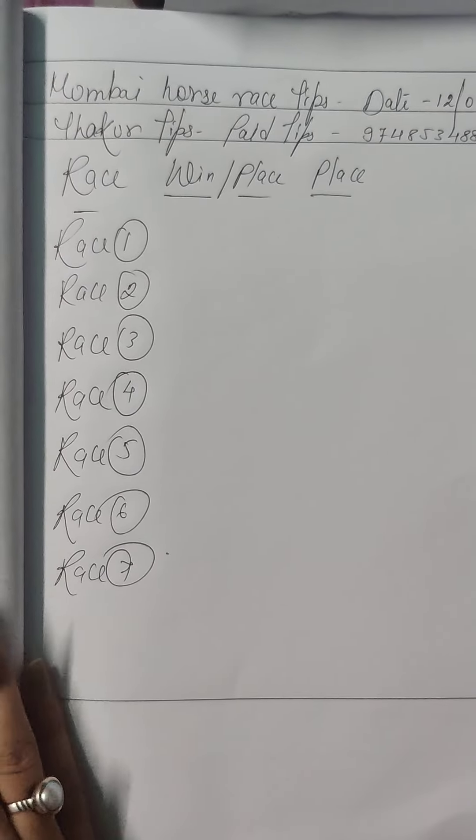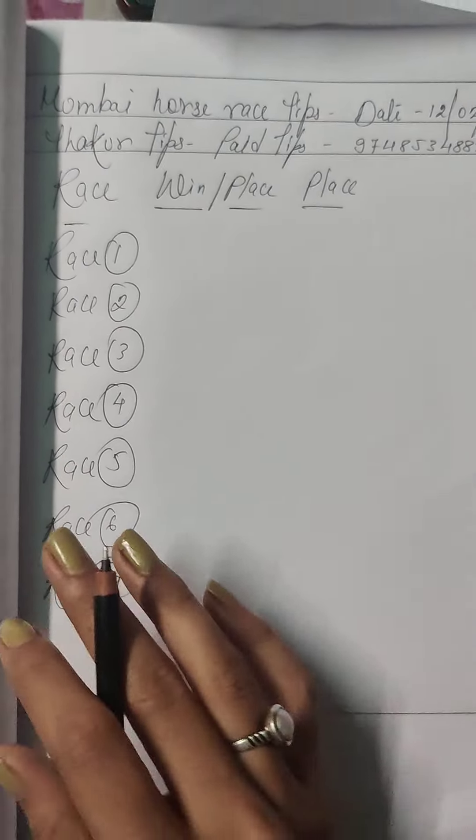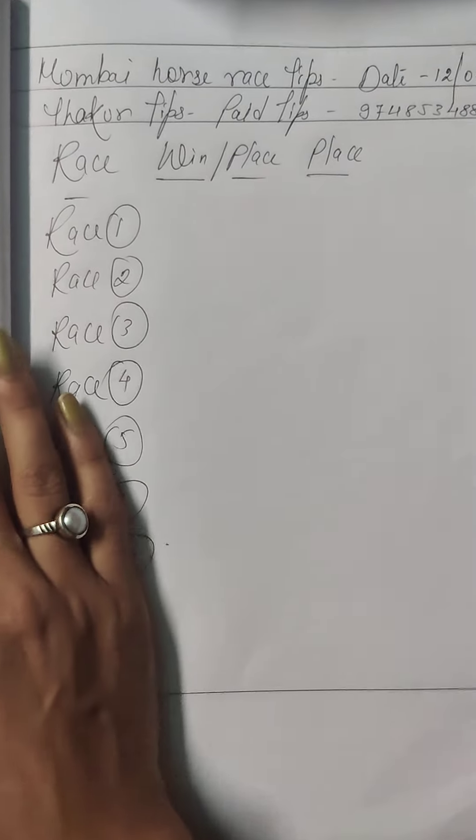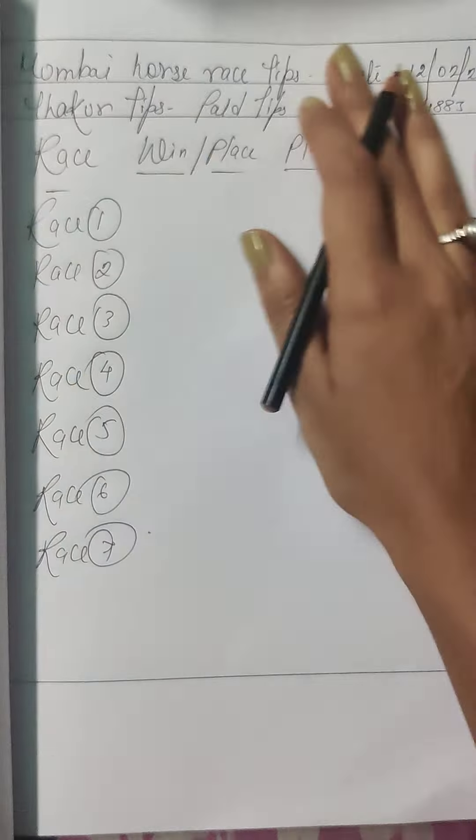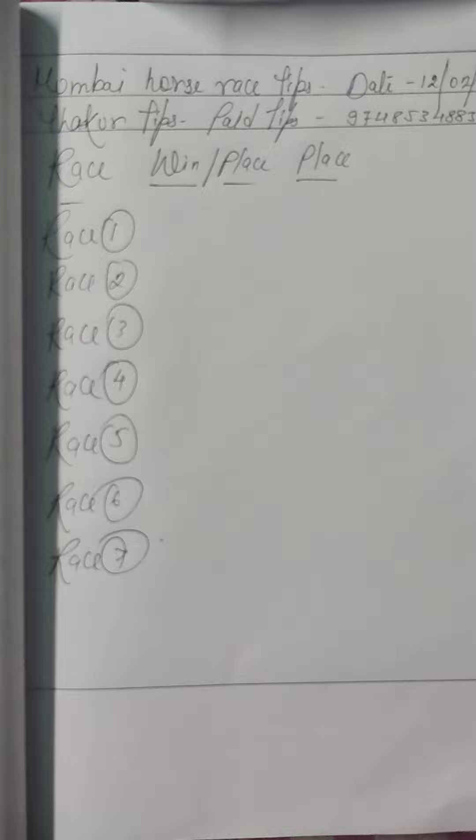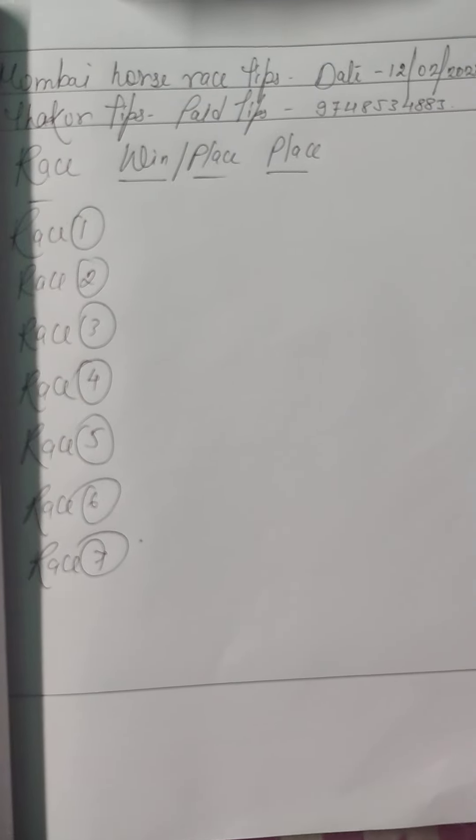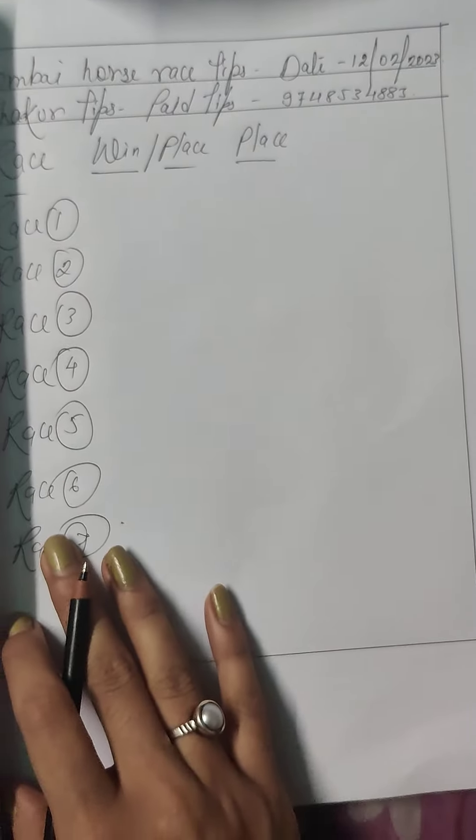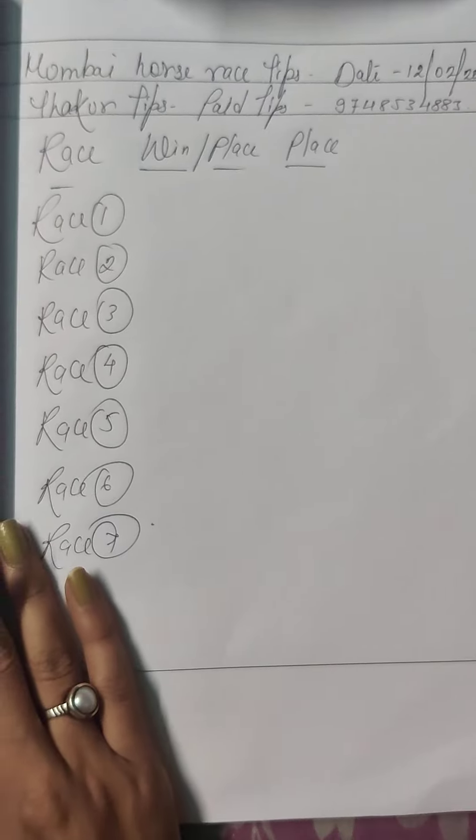So let's go to the next race which is Mumbai's race. So 12-2 means tomorrow. So total 7 rounds. So without wasting your time let's move on to our video.